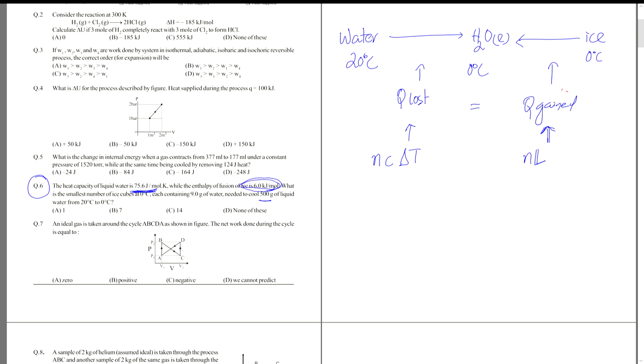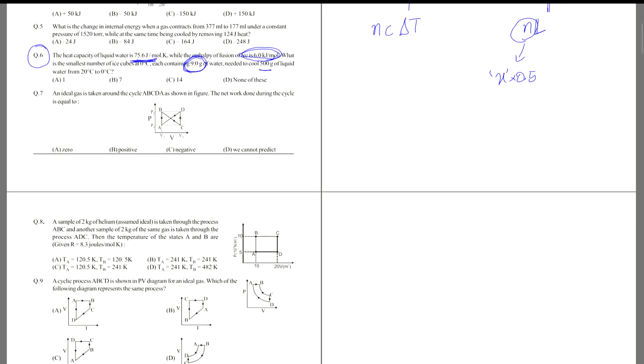And the number of moles can be written as x, which is, let's say, number of ice cubes into the moles in each ice cube. The moles in each ice cube is just half a mole because it's nine grams. So you can write that as x into 0.5. This is what you can use to solve the question.